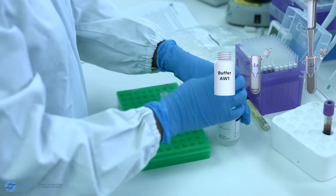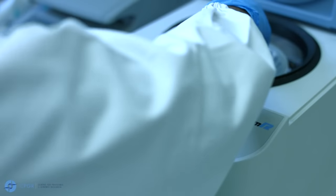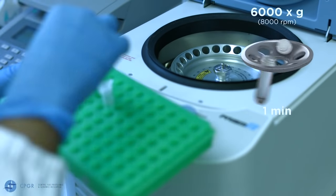Close the caps and return the samples to the centrifuge. And centrifuge for one minute again at 6000 g, that is 8000 rpm.